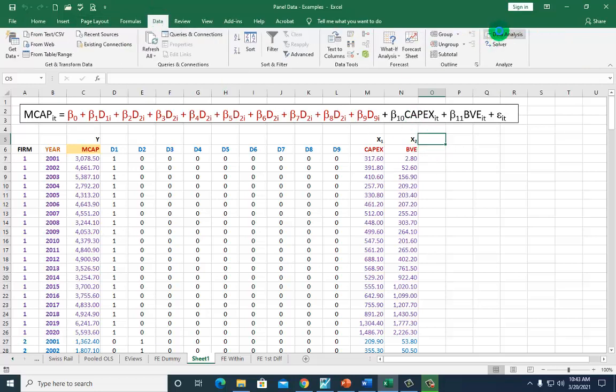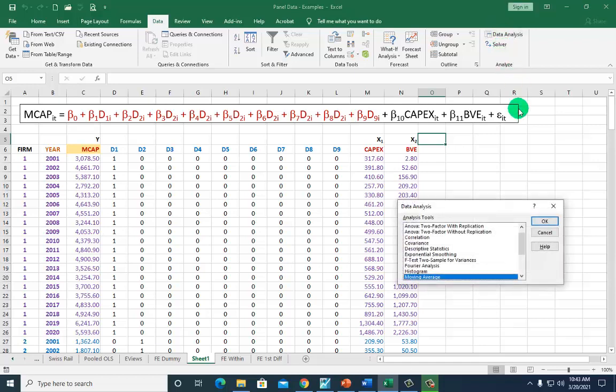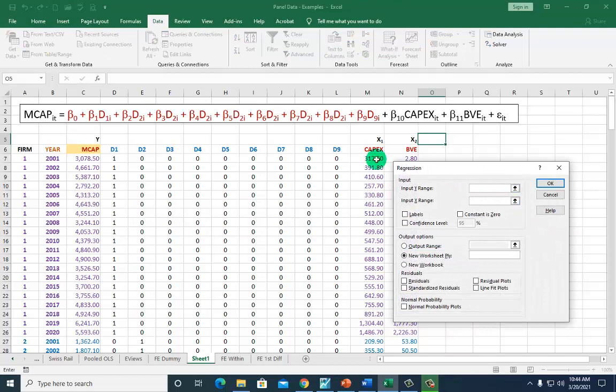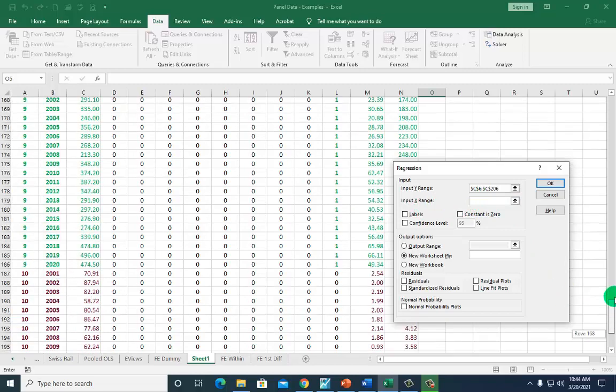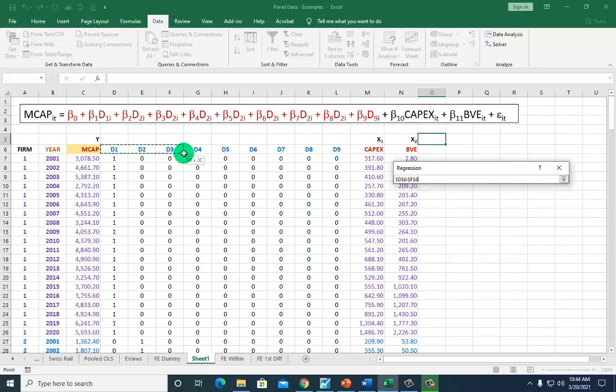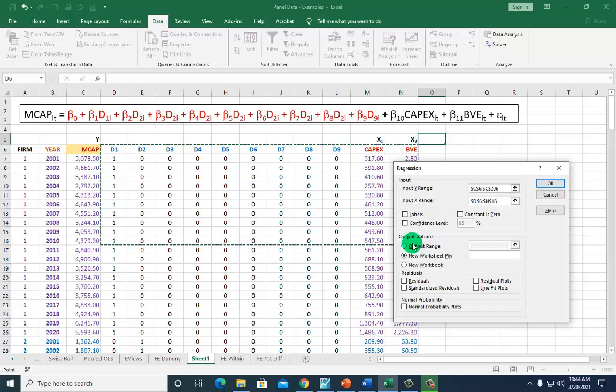go to data, data analysis, and then you're going to scroll down to regression right here, and then OK. And for Y, click on this guy right here and work your way all the way down. And click here for X while cursor is blinking there. Go to the top of the file, highlight all of these guys, and work your way all the way down.